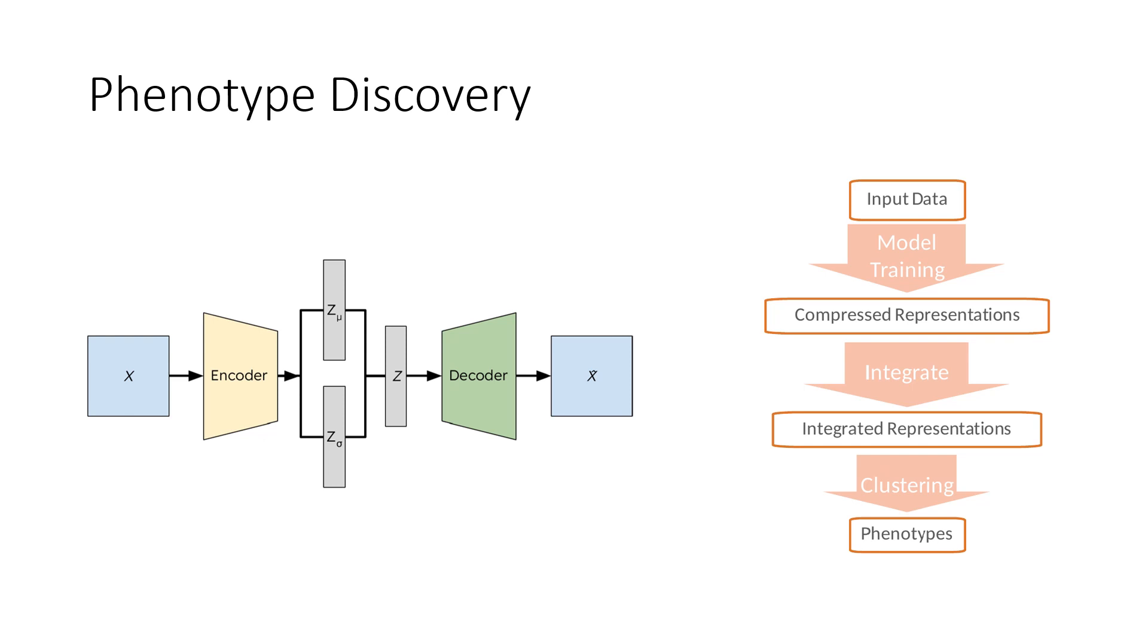The primary model applied is a variational autoencoder, shown on the left, which is used to distill the underlying patterns within the cohort. As shown on the right, the latent vectors, represented by Z, are generated from both the tabular and image data for the patients in the COLO 661 cohort, and will be integrated and clustered to provide more holistic cohorts or phenotypes.